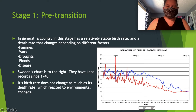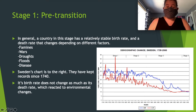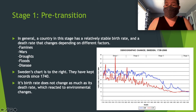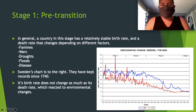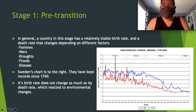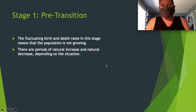Sweden's chart here to the right shows they've kept records of their population since 1740. Their birth and death rate does not change much, while the death rate reacts to environmental changes. You can see that since 1740 they've moved through stage one, stage two, stage three, and into stage four. Stage two is the pre-transition stage.